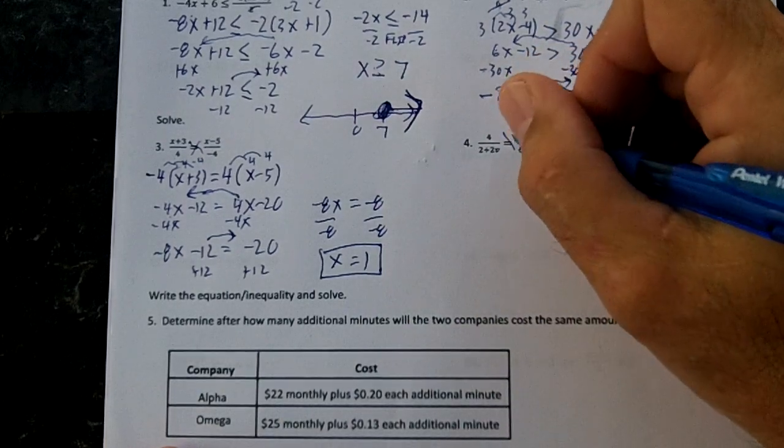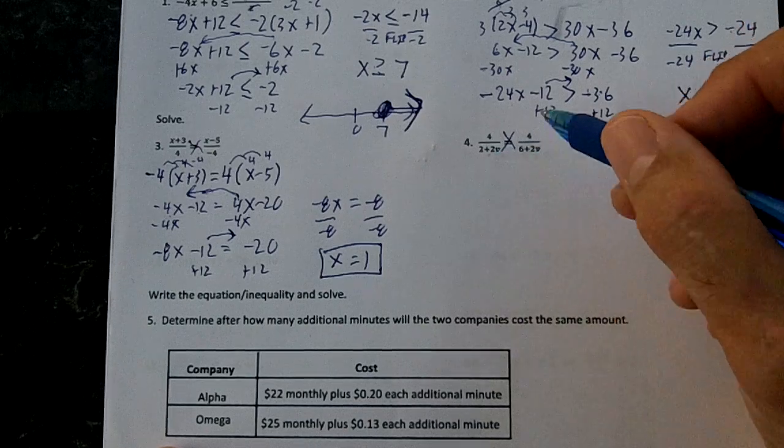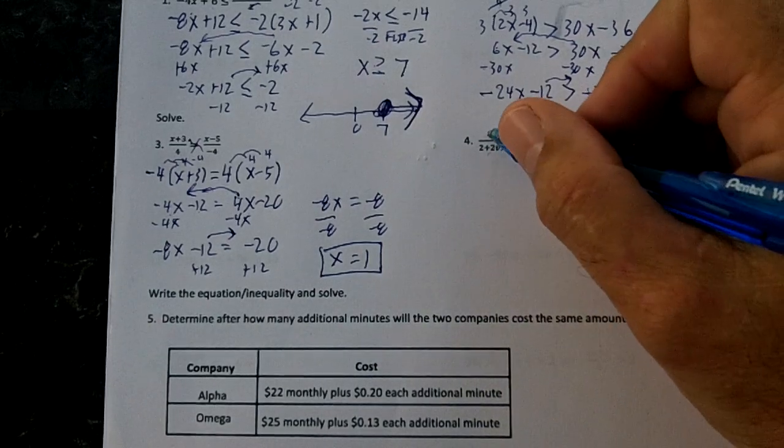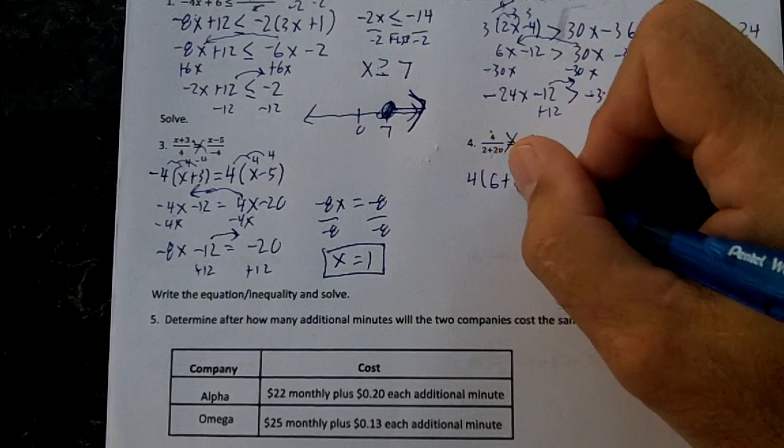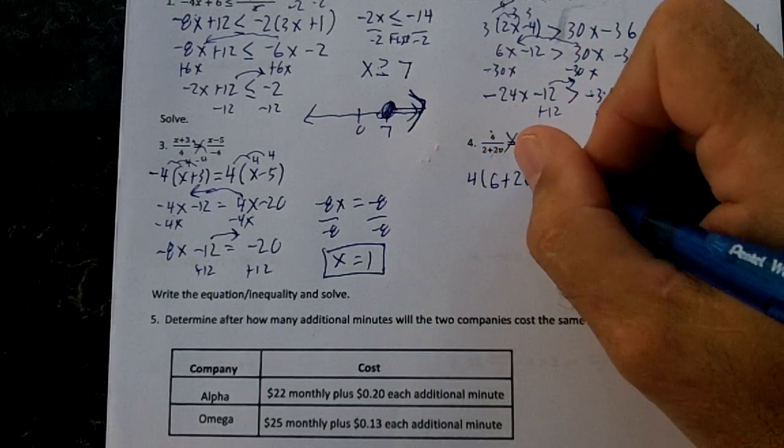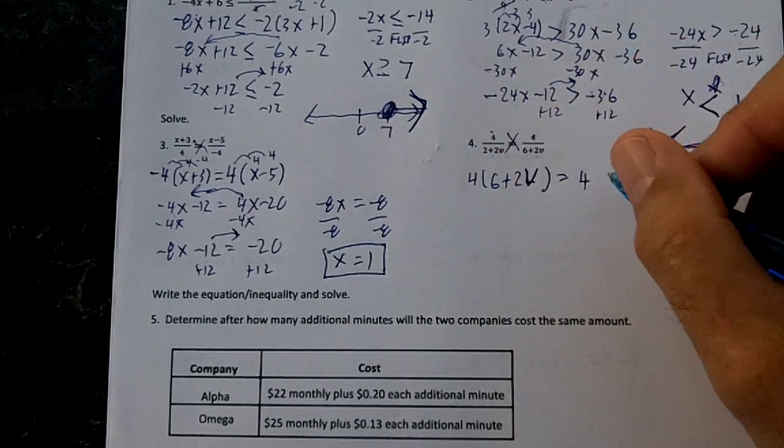Right here, same thing. We have a proportion. We're going to cross-multiply. The product of the means equals the product of the extremes. So we're going to have 4 times 6 plus 2v equals 4 times 2 plus 2v.